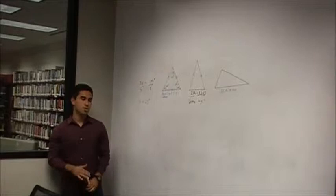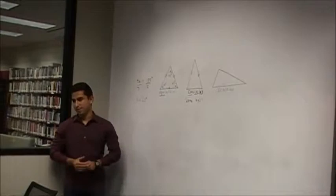Our last triangle is the scalene triangle. Our scalene triangle is defined by having no equal sides and no equal angles.